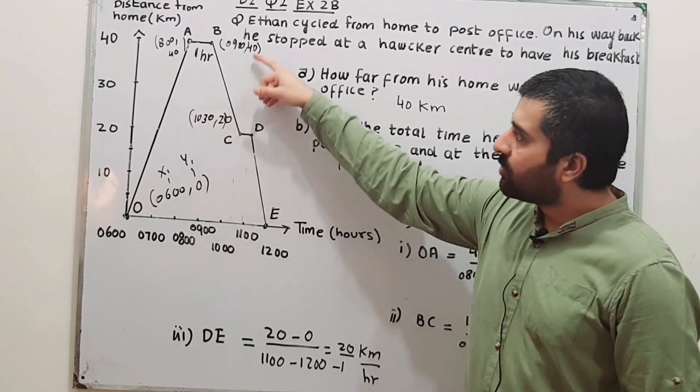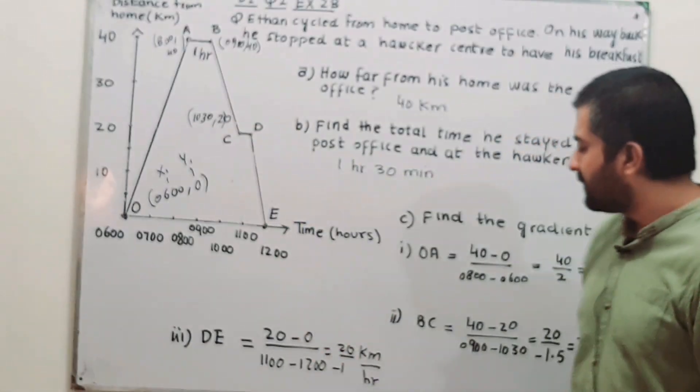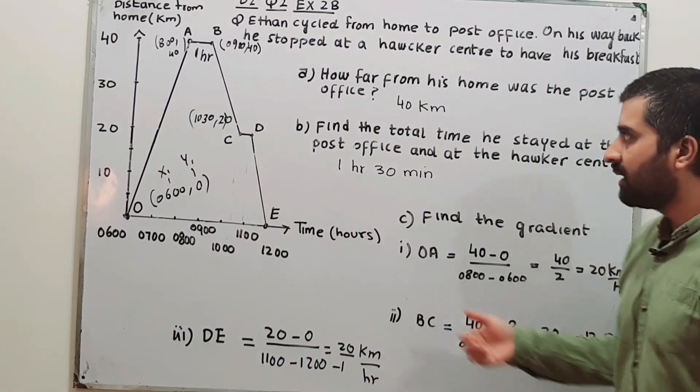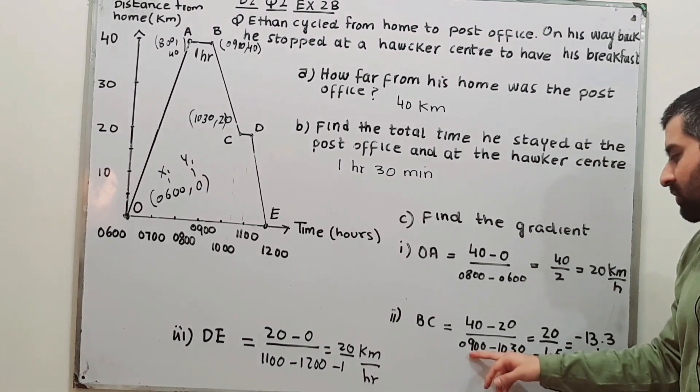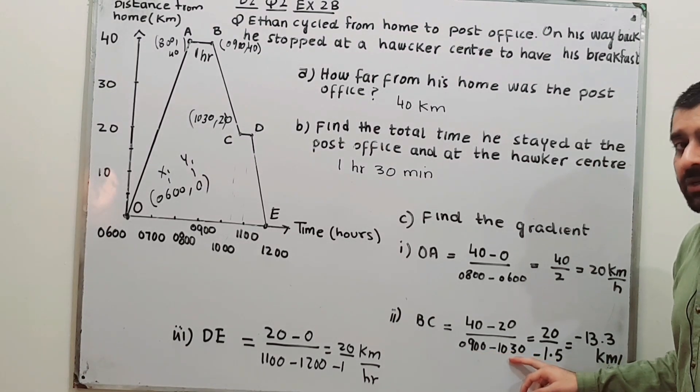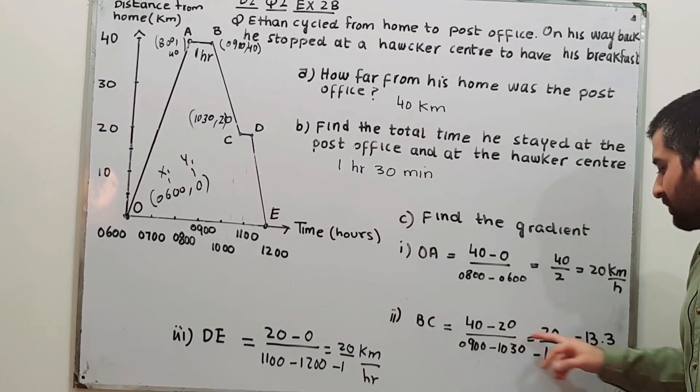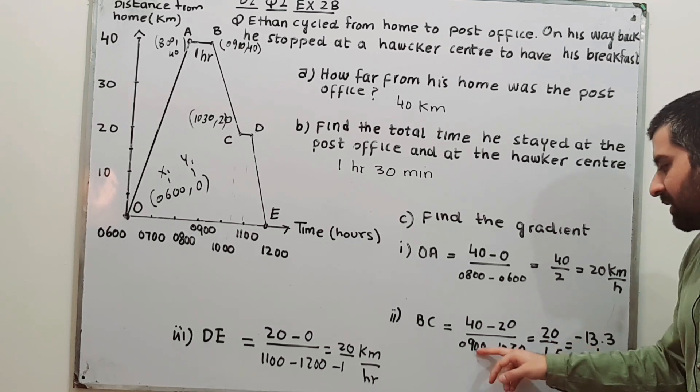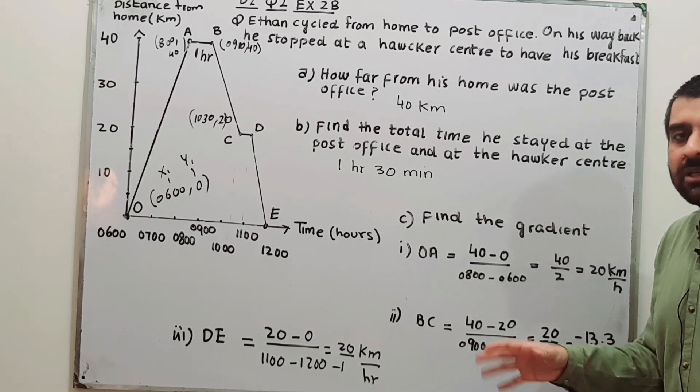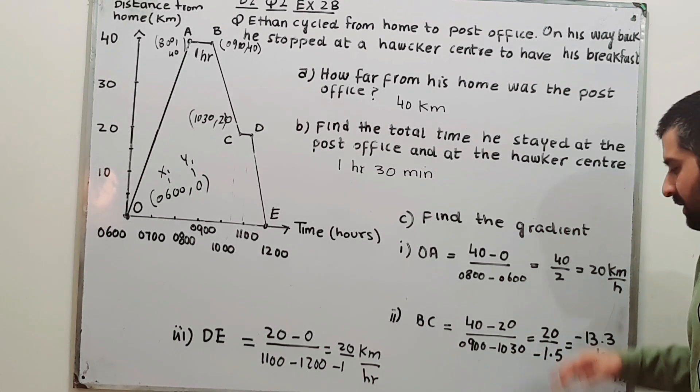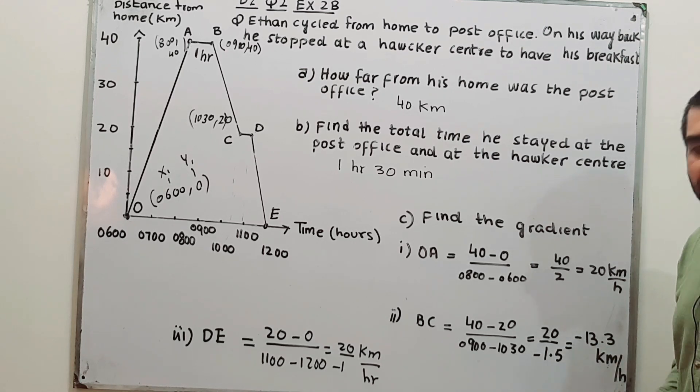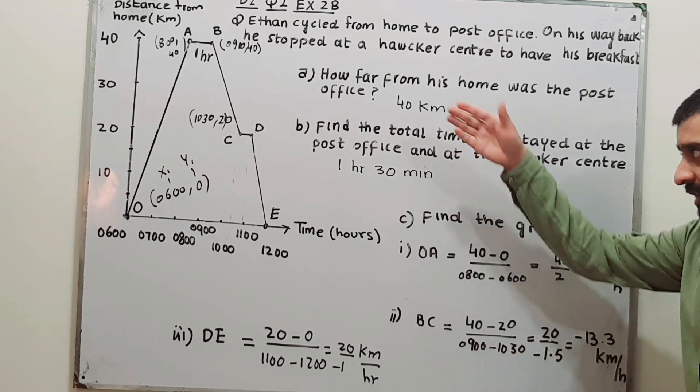So y2 minus y1 divided by x2 minus x1: 40 minus 20 is 20, while 9 hours minus 10.30 hours will give you 1.5 hours. 20 divided by 1.5 will give you 13.3 kilometers per hour, that is speed. So we have a negative gradient for this section.